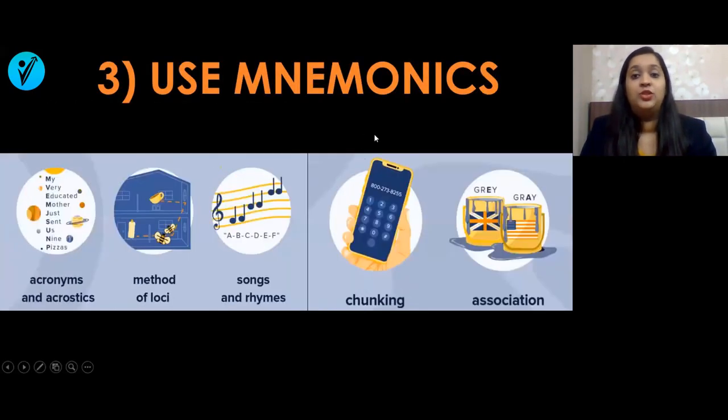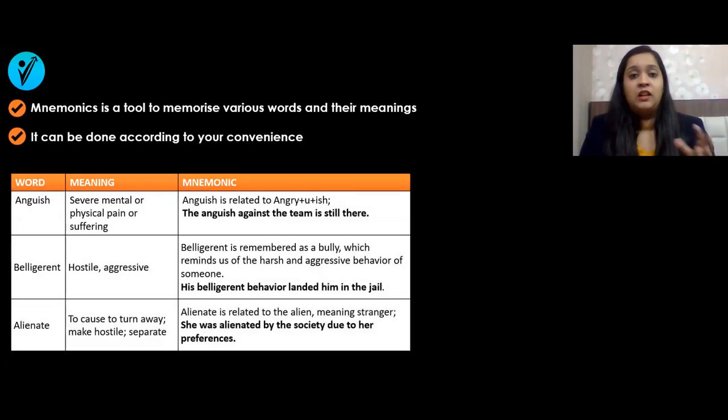The third way is to use mnemonics. Mnemonics are nothing but various tools that help us memorize things in a better way. In childhood, we would make songs or acronyms to memorize points. In this case, you have to memorize the words themselves, so try and associate the word with anything that helps you. It can be done according to your convenience, whatever helps you.